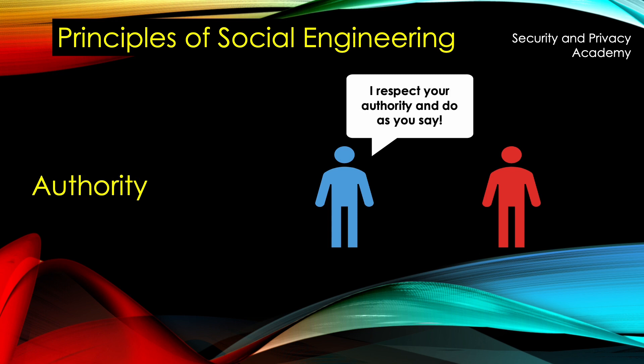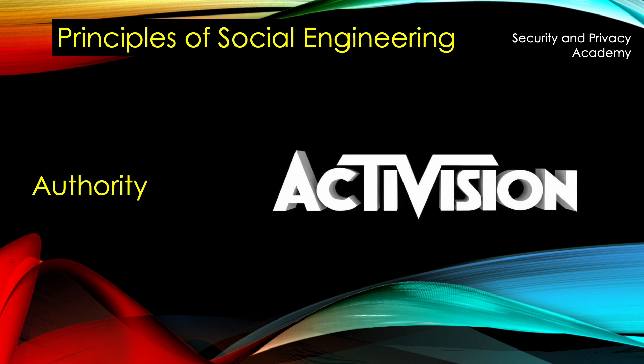The next principle is authority, which we've also mentioned briefly when talking about pressure. People succumb to authority, especially if it's their supervisor. That's why a lot of phishing scams try to impersonate a supervisor, thereby executing their perceived authority over the employee being scammed. This is something that happened, for example, in the Activision hack.